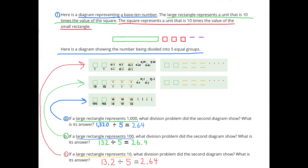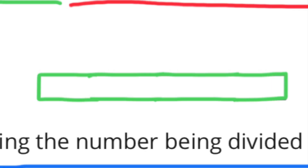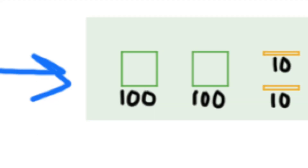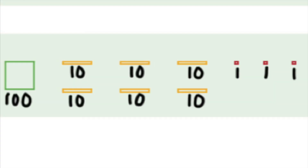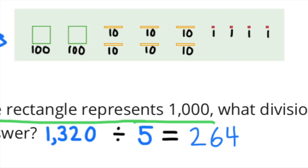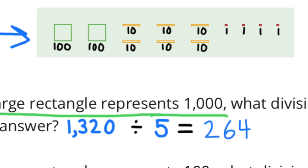There is one large rectangle that represents 1,000, there are three squares that represent 300, and there are two small rectangles that represent 20. The division problem would be 1,320 divided by 5. If the large rectangle represents 1,000, then the squares would represent 100, the small rectangles would represent 10, and the tiny squares would represent 1. 200 plus 60 plus 4 is 264. So 1,320 divided by 5 equals 264.